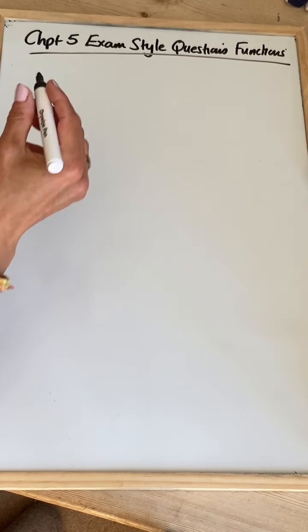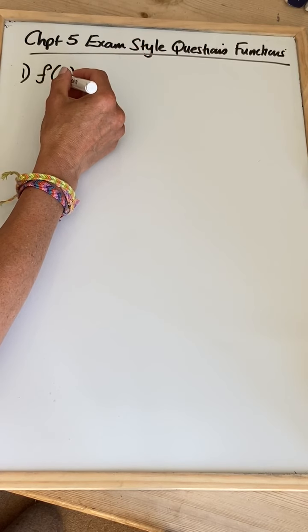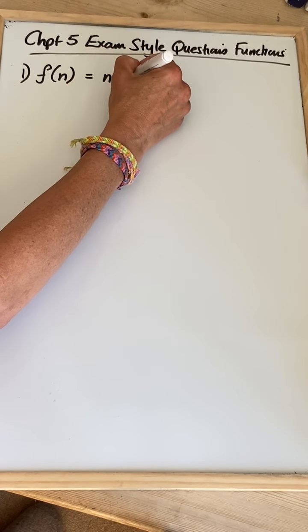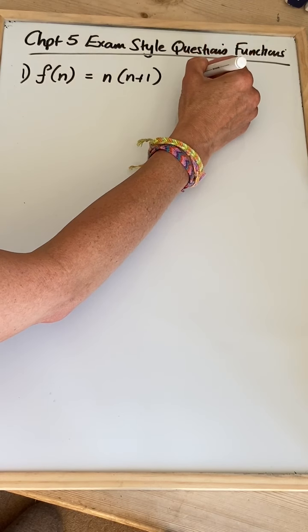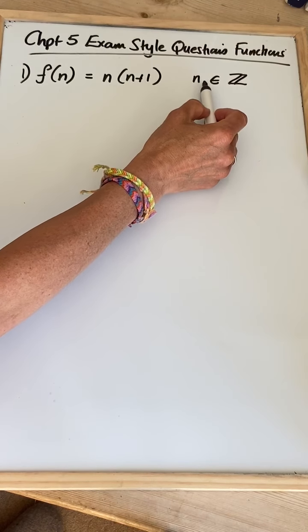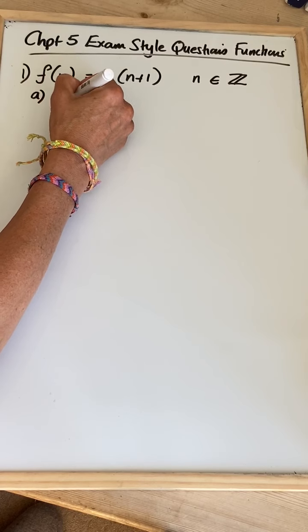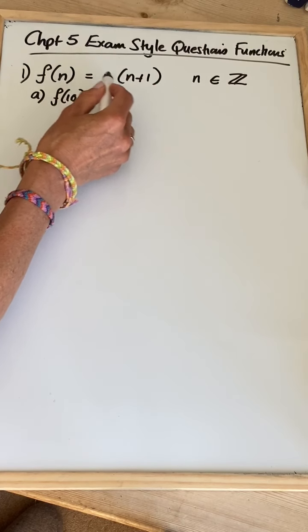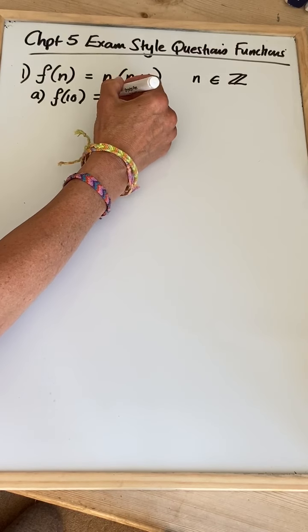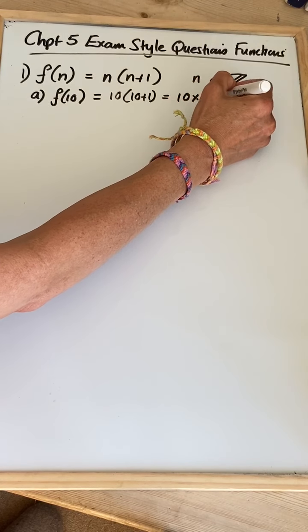So the first question is one that could easily be in just the normal GCSE. We've got a function of n — f of n is equal to n(n+1). n could easily be an x, and n is an integer, so I've put it in that set notation we've used before. n is a member of the set of integers, which are the z's. Part a of the question says what's f of 10? So wherever there's an n in the function, we put a 10 in instead. So it's going to be 10 times (10+1), which is 10 times 11, which is 110.